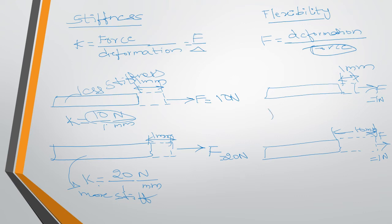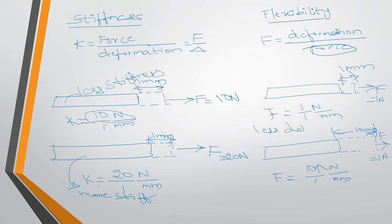You can see the flexibility: F equals deformation divided by force. For the first object, that is 1 mm divided by 1 newton. For the second object, the deformation is 10 and force is 1, so flexibility is 10 mm/N. The second object has more deflection and is more flexible, while the first has less deformation and is less flexible. This is exactly opposite to stiffness.